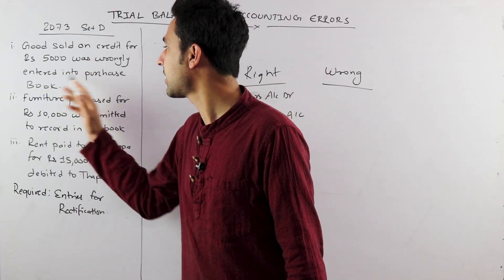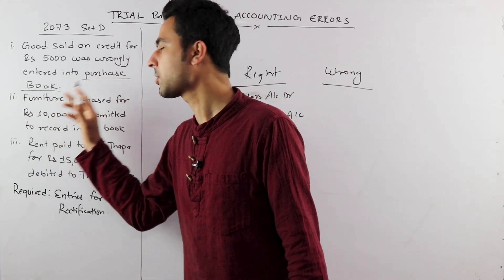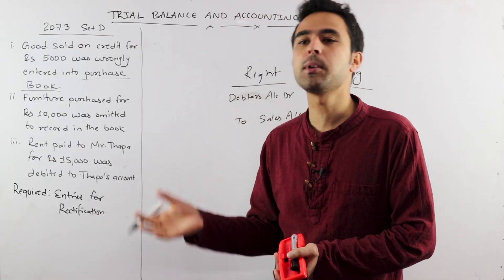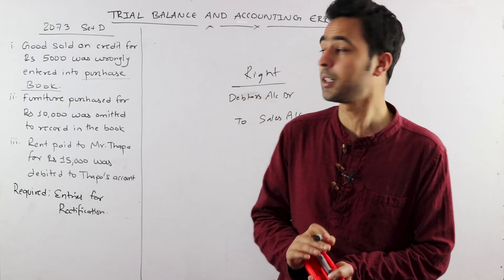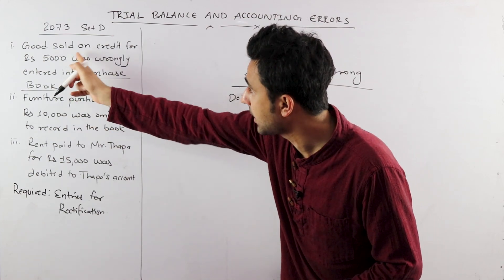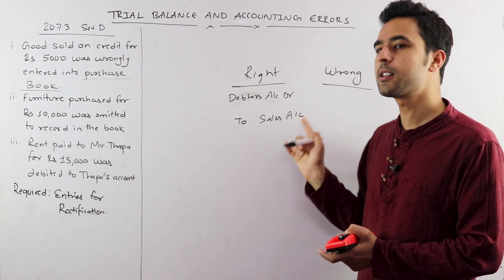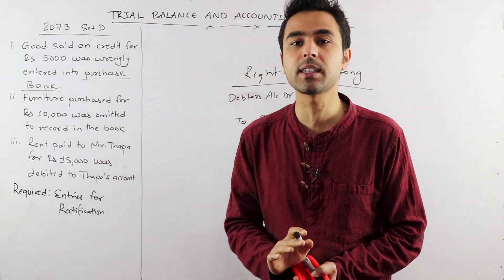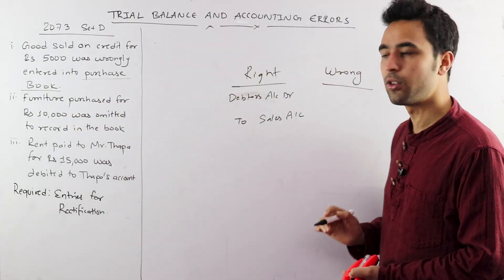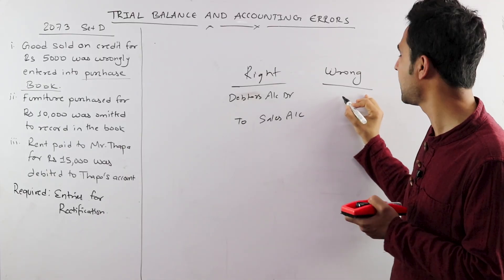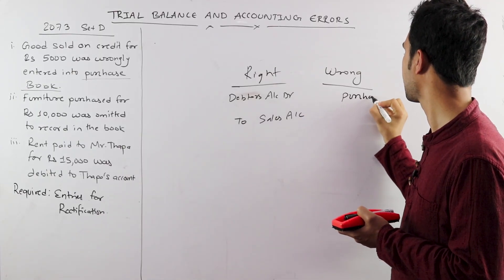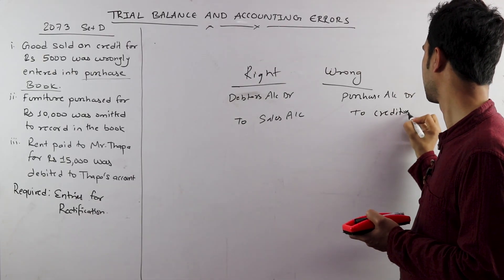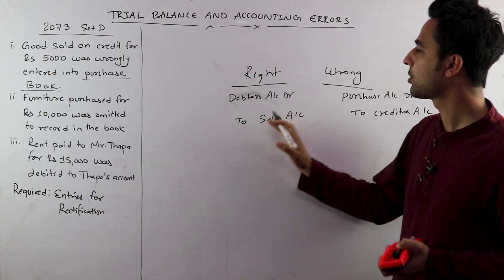What was wrongly entered into the purchase book? The wrong entry was: Purchase account debit to Creditors account.